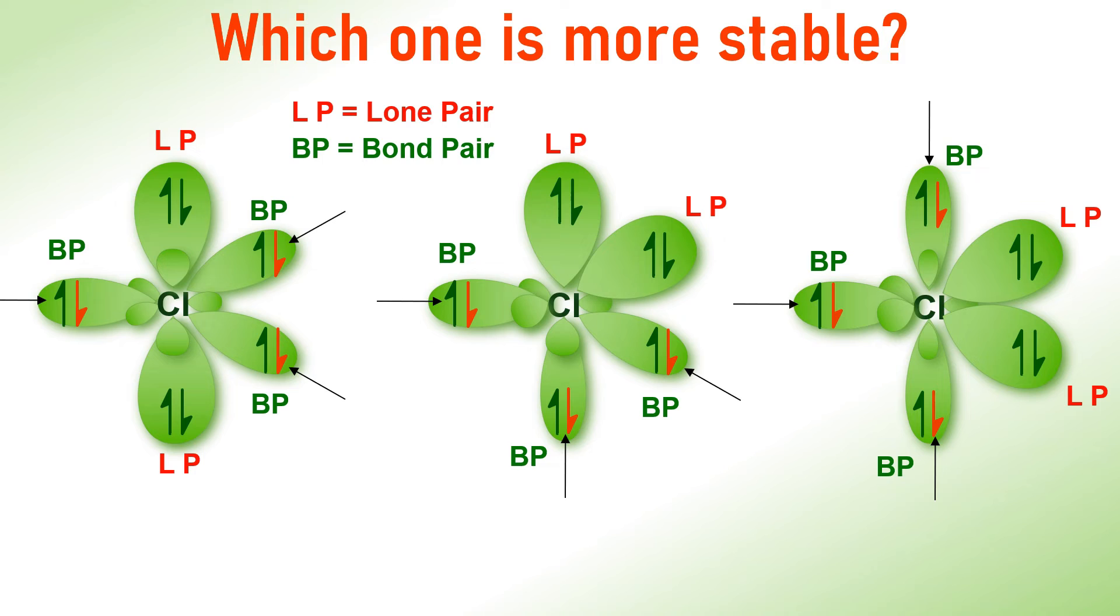Now, we have to choose the most stable arrangement among the three based on the strength of repulsions between these electron pairs. You know that lone pairs occupy more space and exert stronger repulsions compared to bond pairs. Therefore, the order of strength of repulsion is lone pair-lone pair greater than lone pair-bond pair which in turn greater than bond pair-bond pair repulsions.